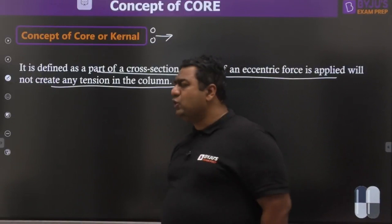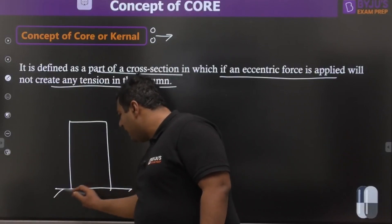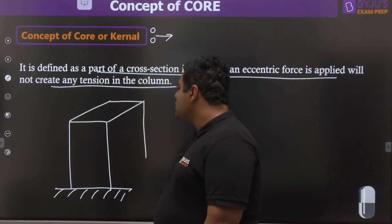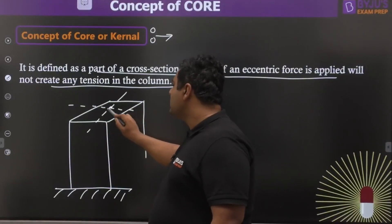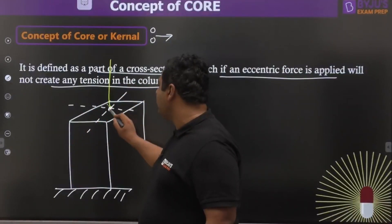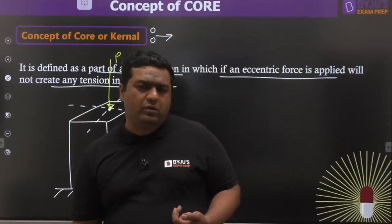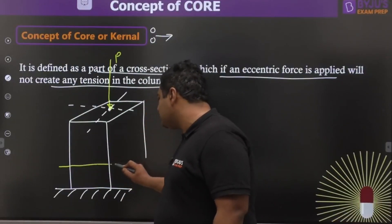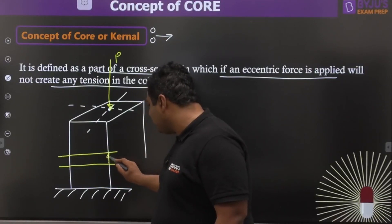I will show you this with an example. Let us say I have a column like this with a cross section. The cross section will obviously have some centroid or CG. If some force is acting at the CG or centroid, this force will not create any kind of tension because it is a direct compressive force. The stresses because of this will be direct compressive, sigma_C = -P/A.